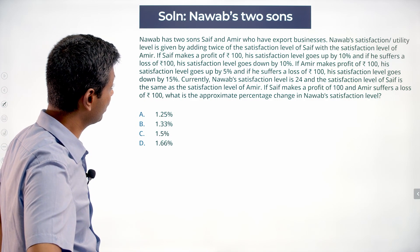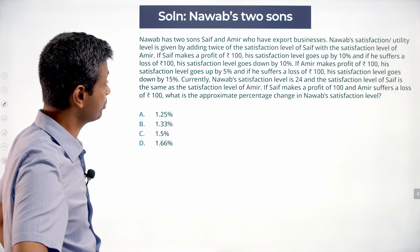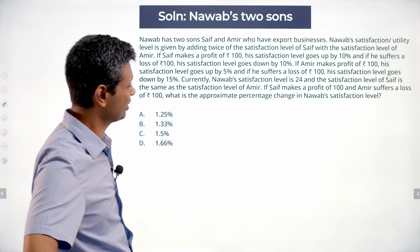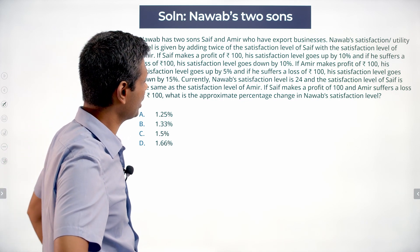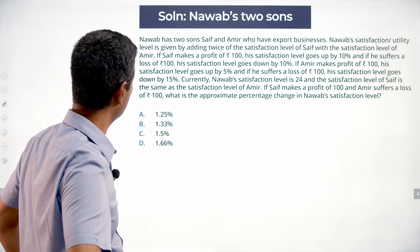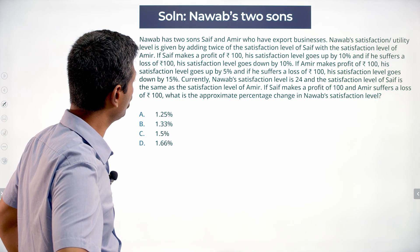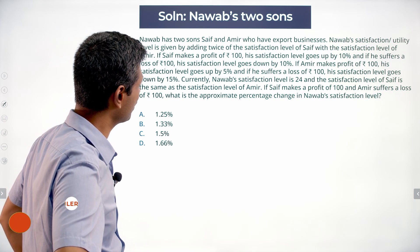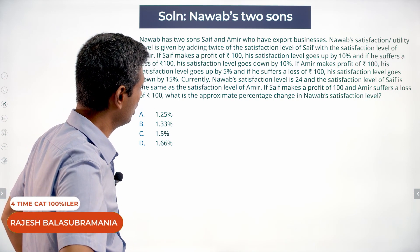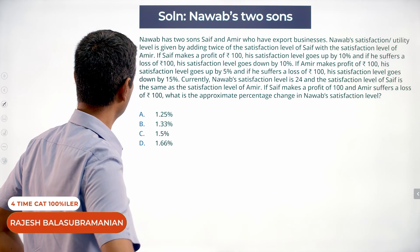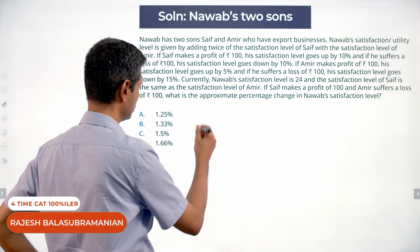Nawab has two sons, Saif and Ameer, who have export businesses. Nawab's satisfaction or utility level is given by adding twice the satisfaction of Saif with the satisfaction level of Ameer.